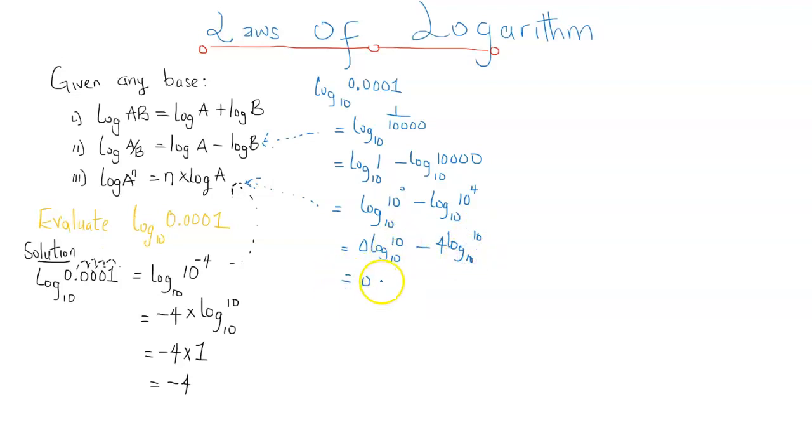We know that log 10 to base 10 is 1, so this is going to be 0 times 1 minus 4 times 1. 0 times 1 is 0 anywhere in the world. 4 times 1 is 4, so 0 minus 4 is going to give a negative 4.